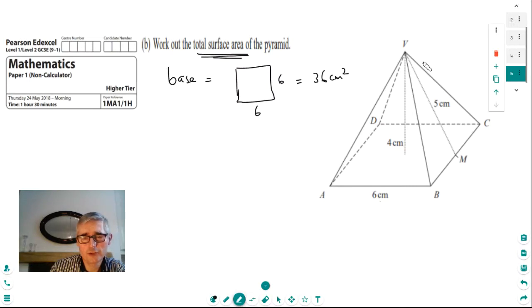Now the vertical sides, each one's a triangle. So we've got four triangles. And each triangle is like this. You can see we're given this dimension, which is five centimetres. So we know that from there to there, it's five centimetres. And we also know that that is six centimetres.